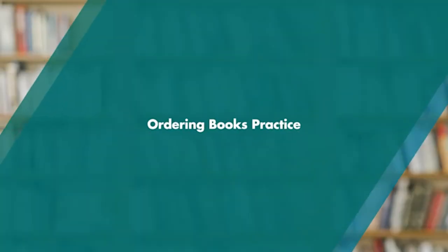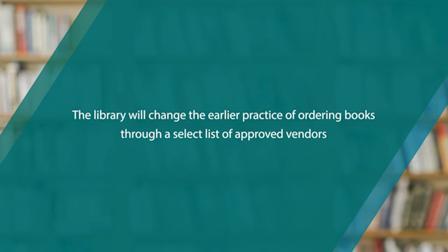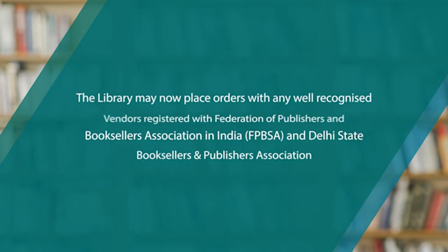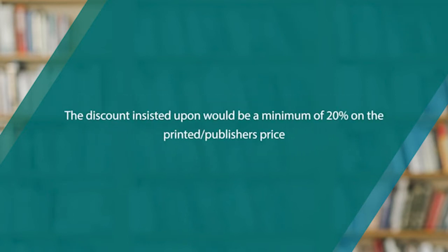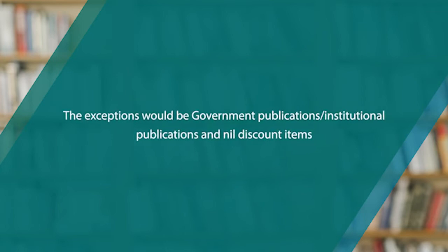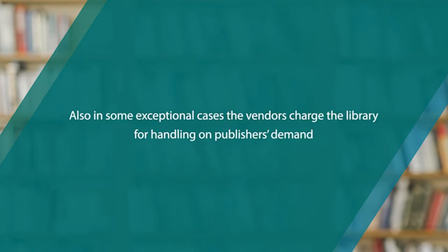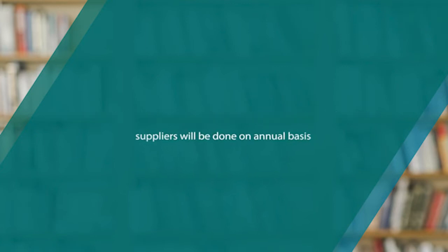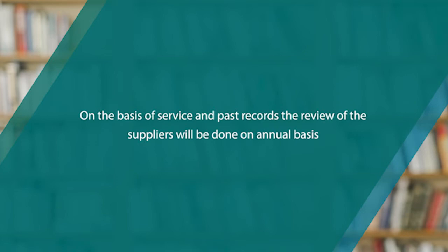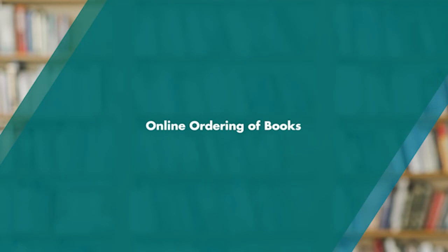Regarding ordering the books: the library may place orders with any well-recognized vendors registered with the Federation of Book Publishers, Booksellers Association of India, delisted booksellers, or the Cover Publishers Association. The discount insisted upon would be a minimum of 20% on the printed publisher's price. Exceptions include government publications, institutional publications, and nil-discount items. For multiple-volume books and encyclopedias, efforts may be made to obtain higher discounts based on service and past records. The review of suppliers is done on an annual basis.